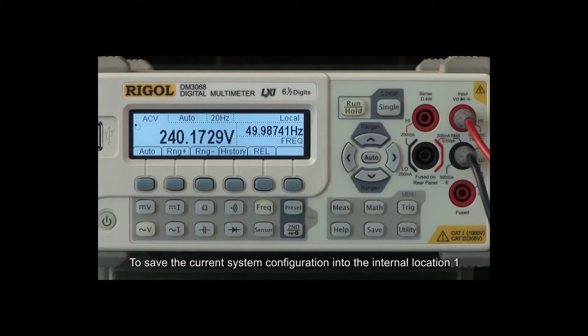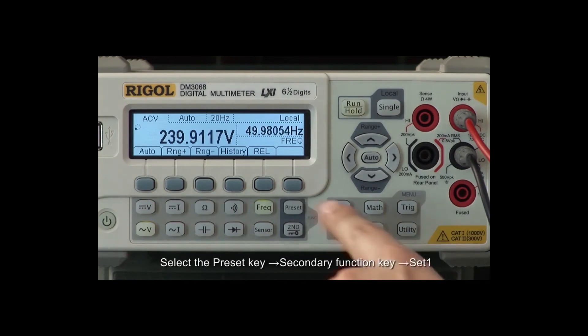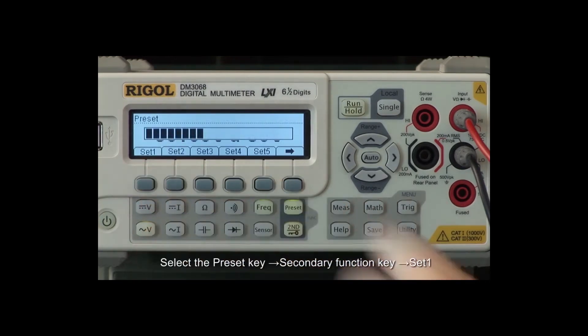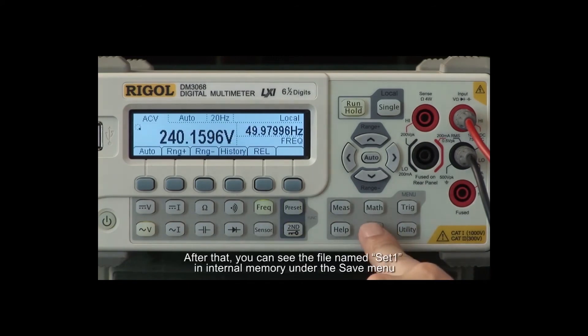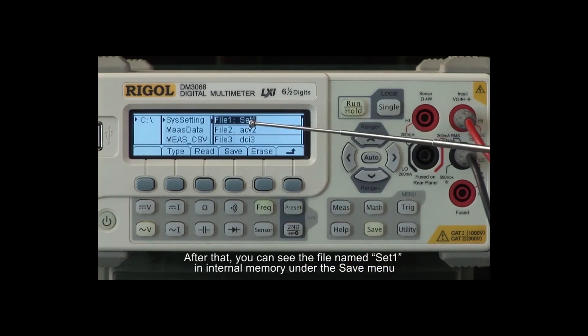To save the current system configuration into the internal location 1, select the preset key, the secondary function key, and set 1. After that, you can see the file named Set 1 in internal memory under the save menu.